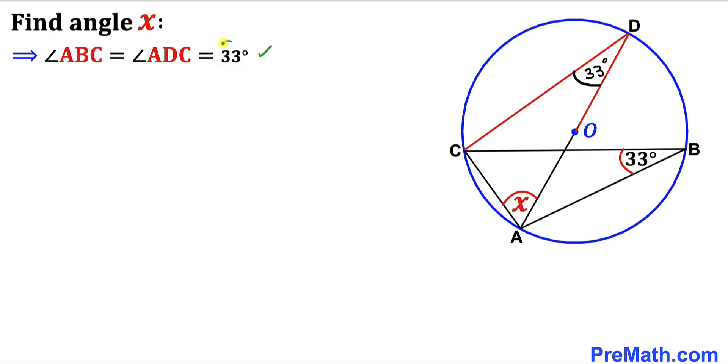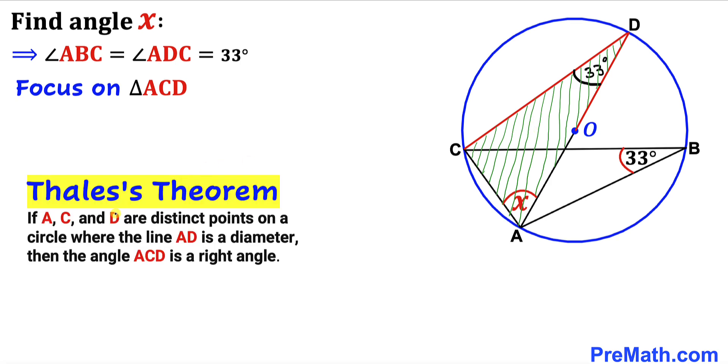Here's our next step: let's focus on triangle ACD. Now let's recall Thales' theorem: if points A, C, and D are on the circle and AD is the diameter, then angle ACD is going to be a 90-degree angle. Therefore, angle ACD turns out to be 90 degrees.